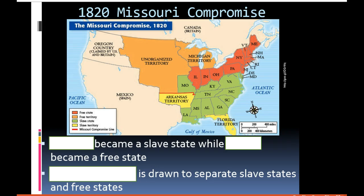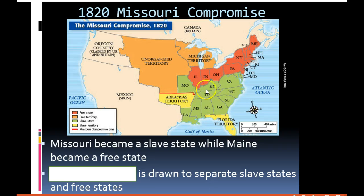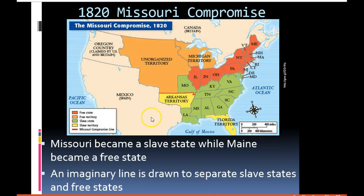Two important government decisions also led to the Civil War. The first was the Missouri Compromise of 1820, which we learned about previously. Missouri wanted to join as a slave state, but that would have made the count of slave states higher than free states. So it was decided that Maine would come in as a free state and Missouri as a slave state. Then they drew the 36°30' latitude line across the country: any future states north of the line would be free states; any future states south of the line would be slave states.